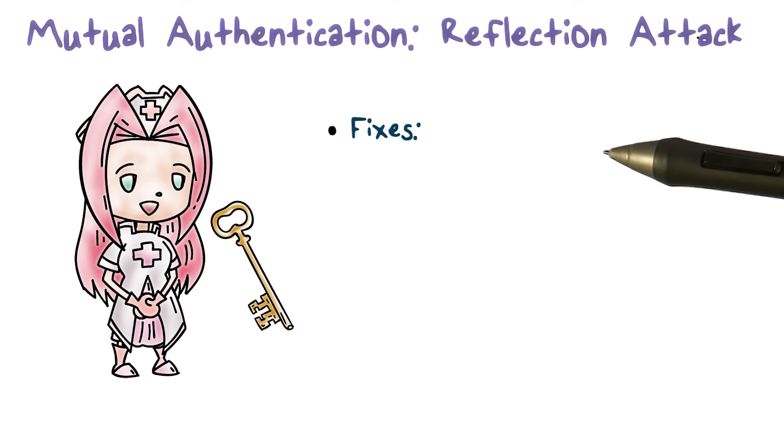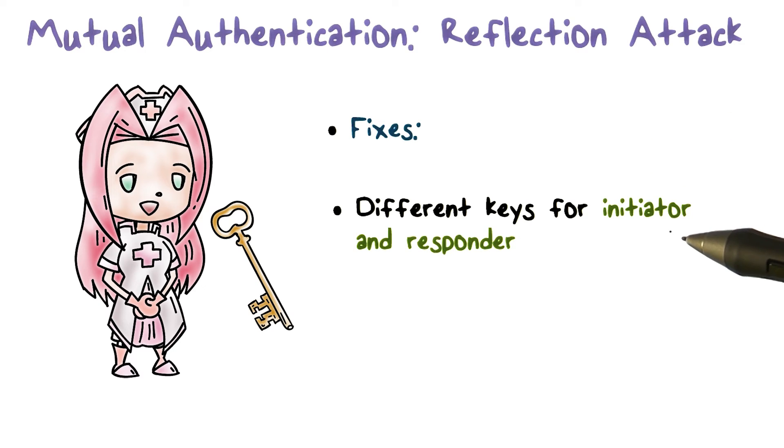So how can we prevent reflection attacks? One way is to use two different shared keys. One is for the initiator of the connection, say Alice, and the other is for the responder, say Bob.